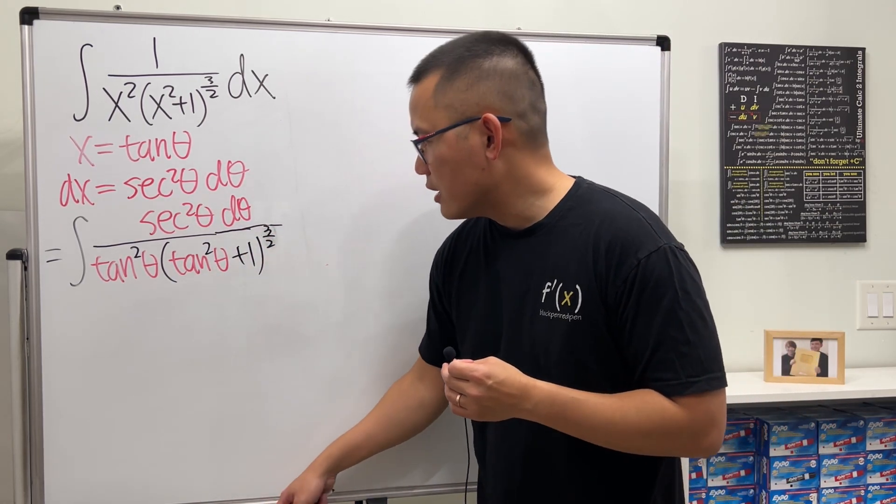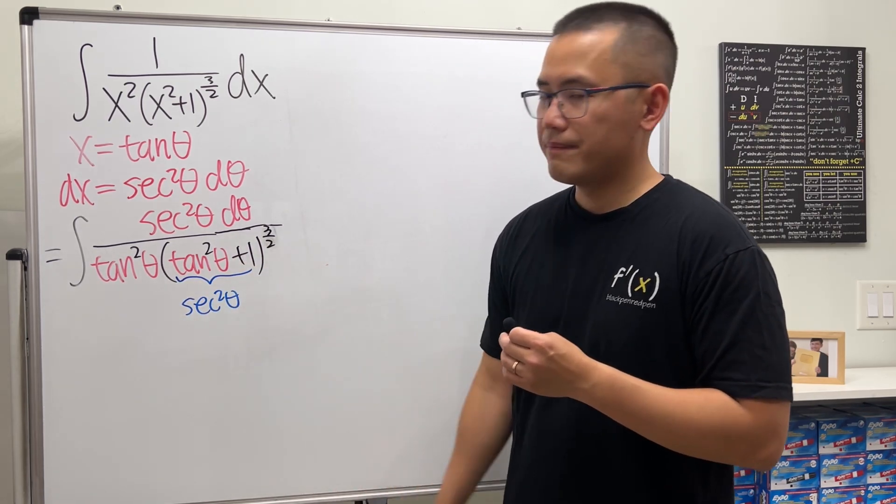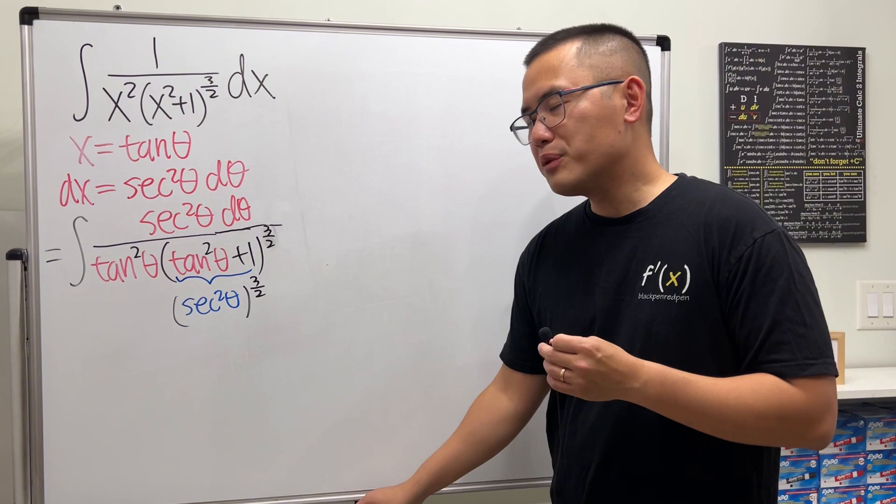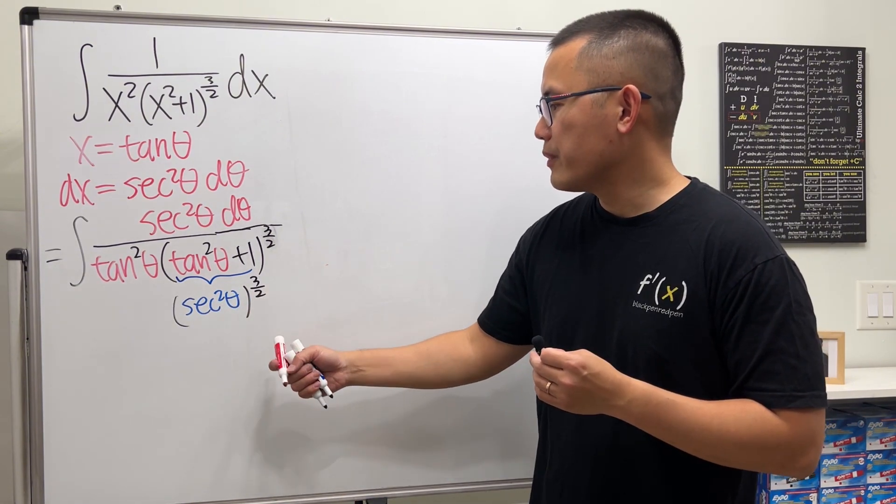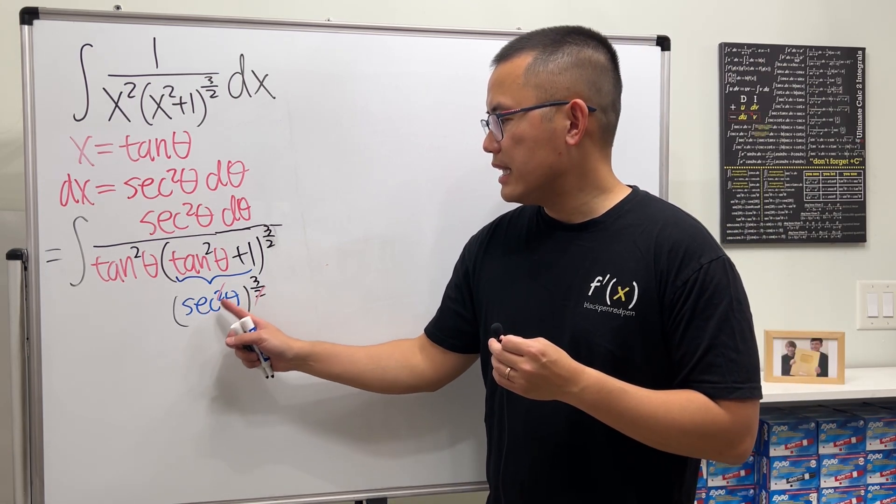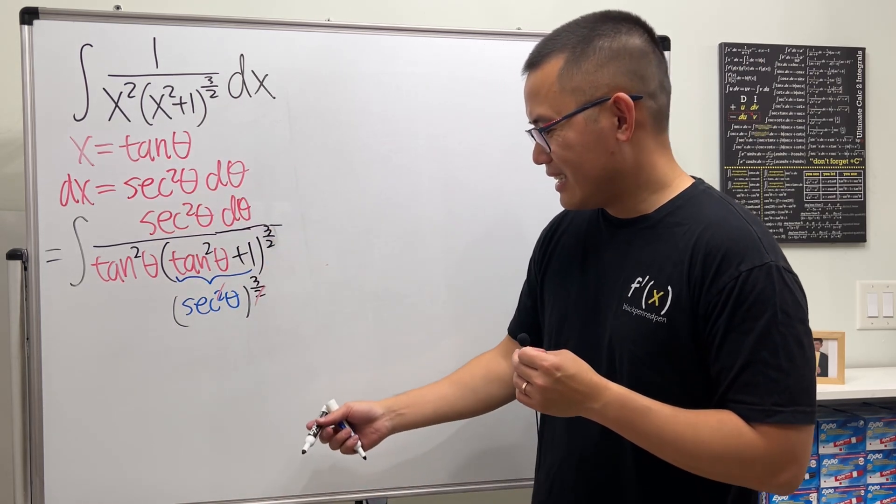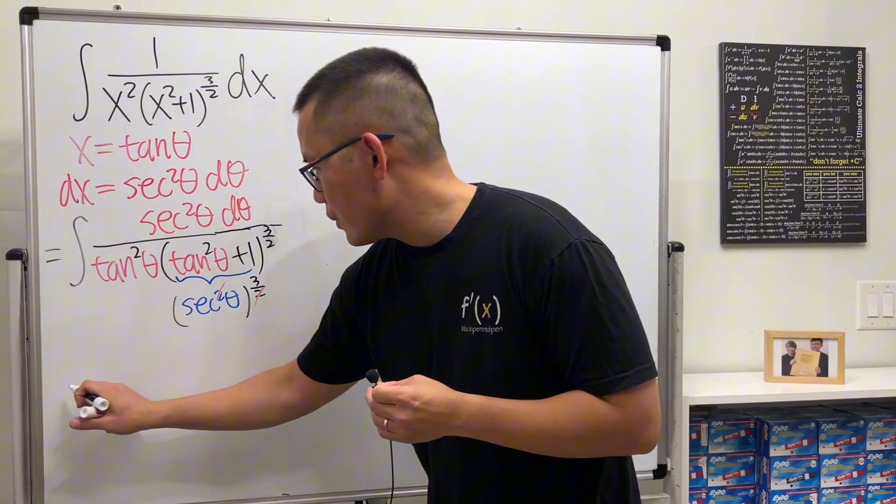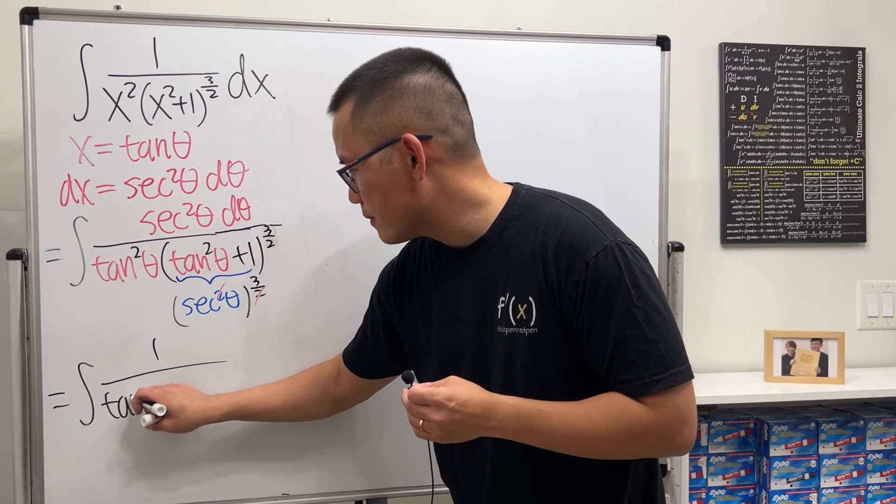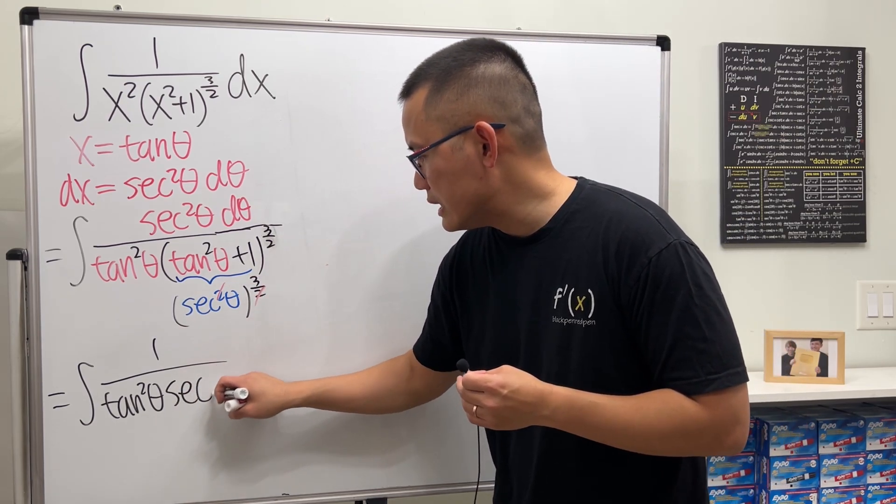Now the simplification comes. This right here is the same as secant squared theta, raised to the 3/2 power. We can multiply the powers together, and the two and that two will cancel. On the bottom we have secant to the third power theta, and on the top we have secant squared theta. We can cancel them out, so we just have 1 over secant theta.